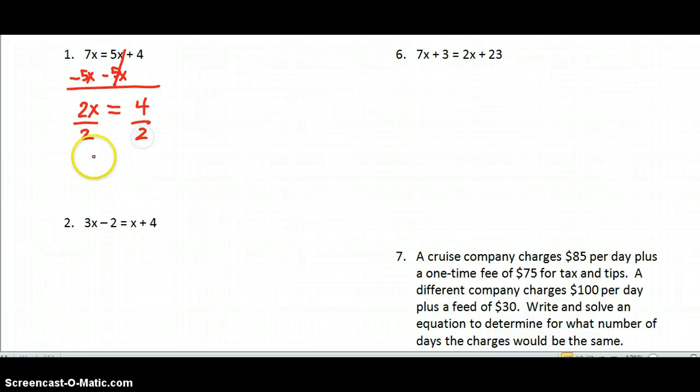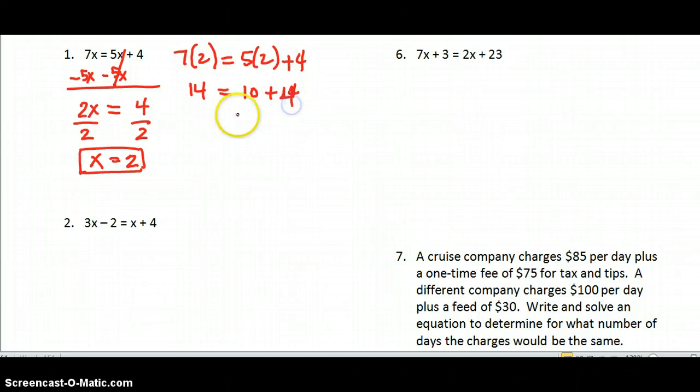Now that's a simple one-step equation from there, divide both sides by 2, and x is 2. So when I take my time to check that, 7 times 2, it doesn't look like it's going to work at first. But if you keep sticking with it, 7 times 2 is 14, and 5 times 2 is 10 plus 4, we find out that we do end up with 14 equals 14. So it does check out, after all.